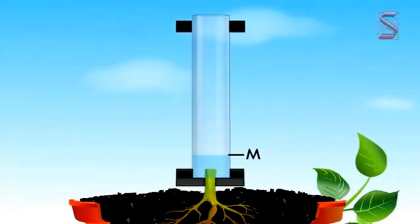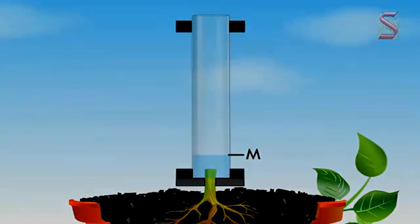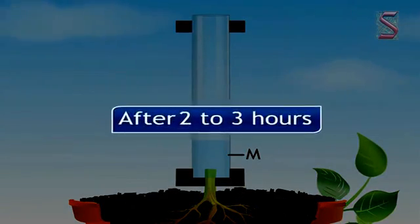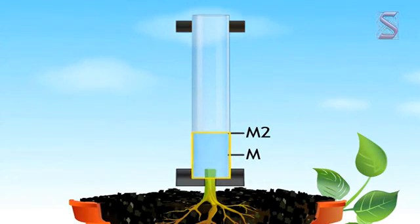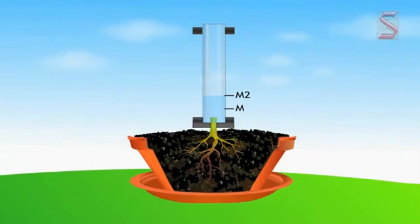Mark the level of water M in the tube. Keep your arrangement aside for two to three hours, then observe and mark the water level M2 in the tube. You will notice that there would be an increase in the water level. The water has climbed up due to the root pressure. However, this pressure is not enough to move water in tall trees.